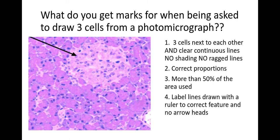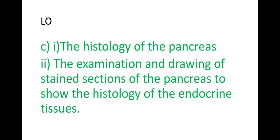Label lines must be drawn with a ruler to the correct feature with no arrowheads. You need to identify at least three parts of the image — for example the nuclei, the cytoplasm, and the cell membrane. That is how you get full marks on a photomicrograph question. Like I said, it comes up every single year, so make sure you can draw an image from a photomicrograph or microscope image. Good luck with your exams and all the best with your studies.